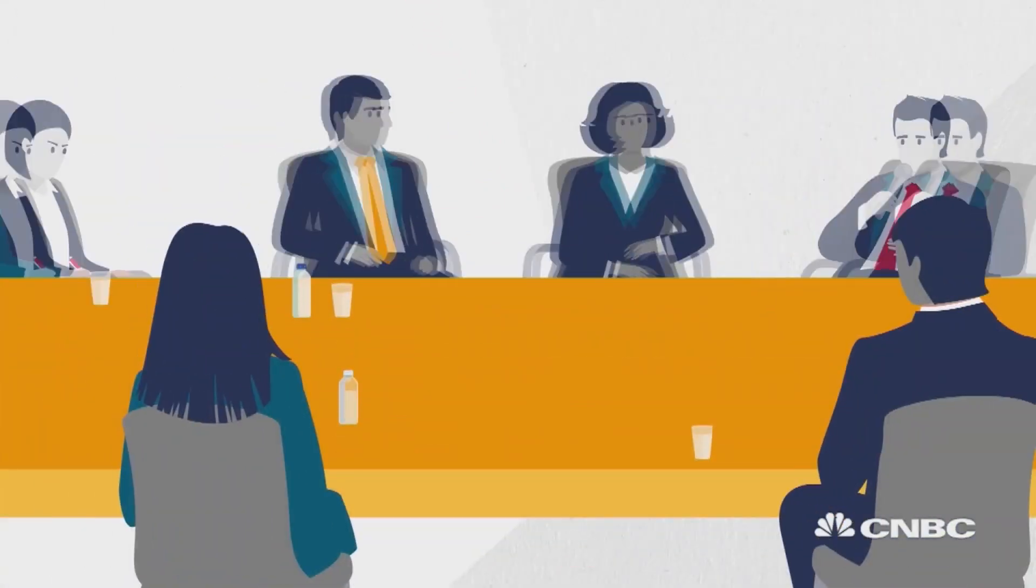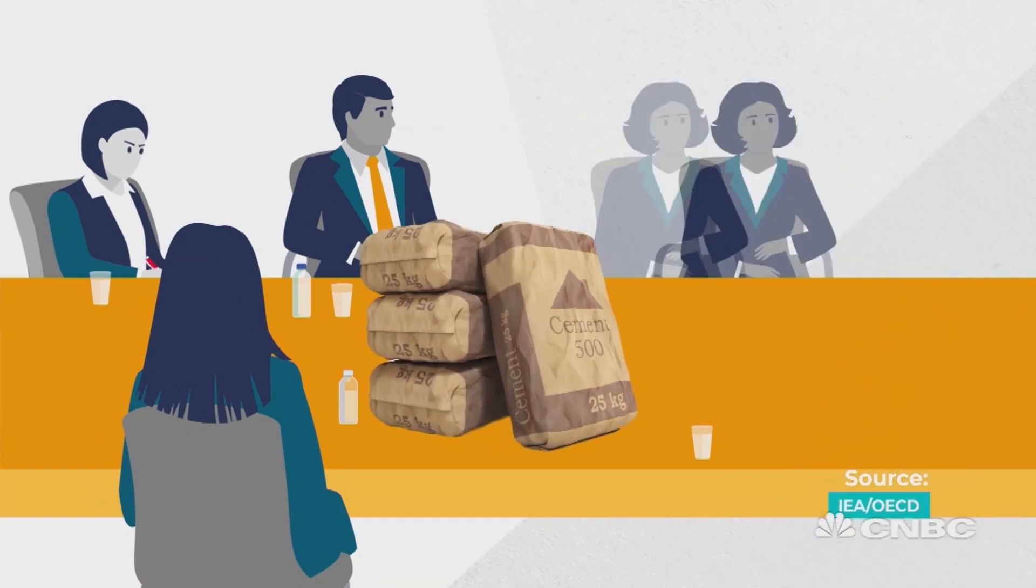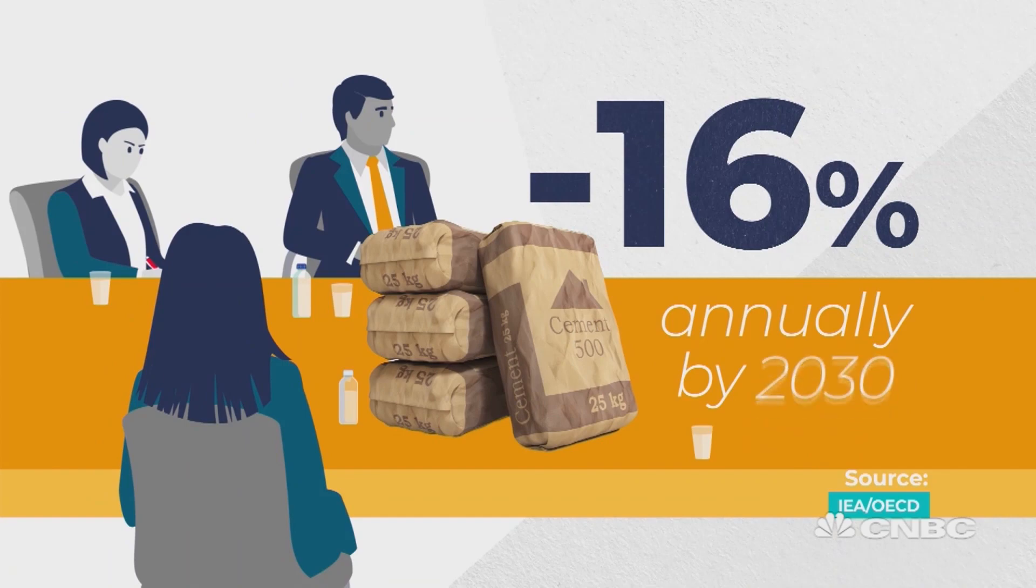So, some intergovernmental agencies say the cement industry has to reduce its annual emissions by at least 16% by 2030.